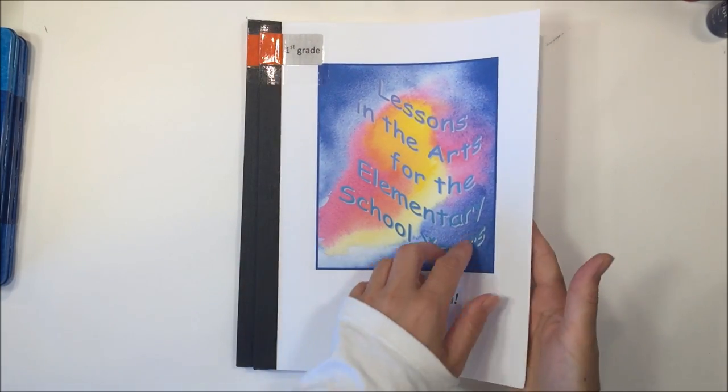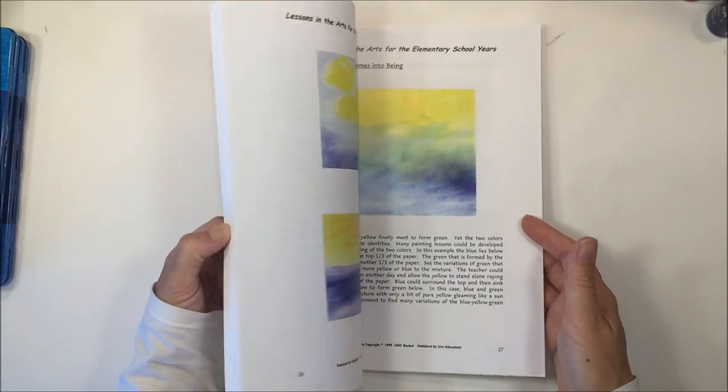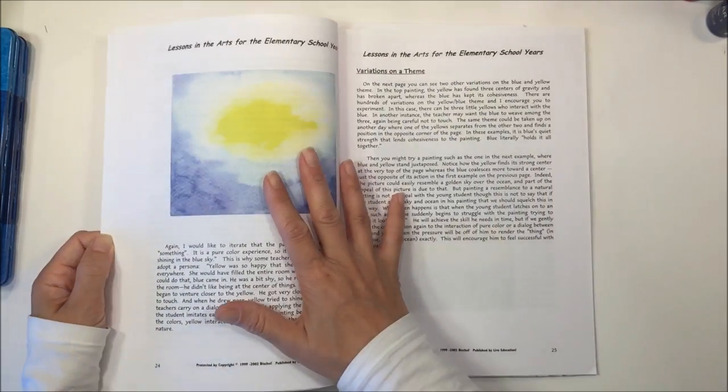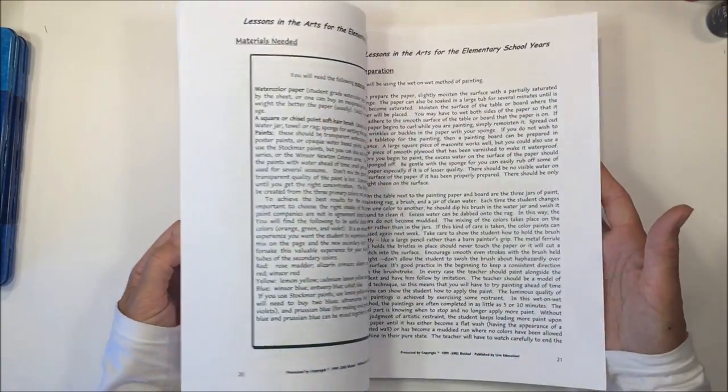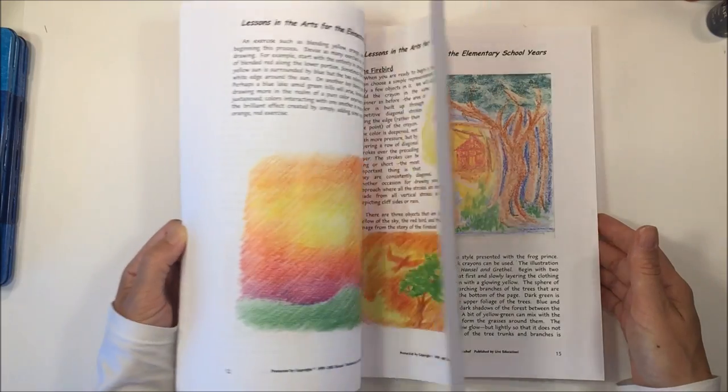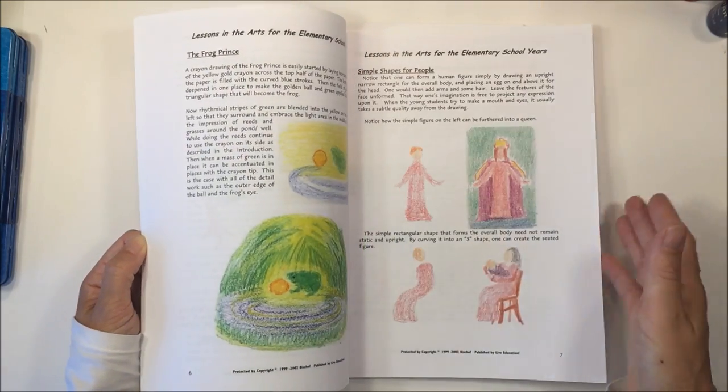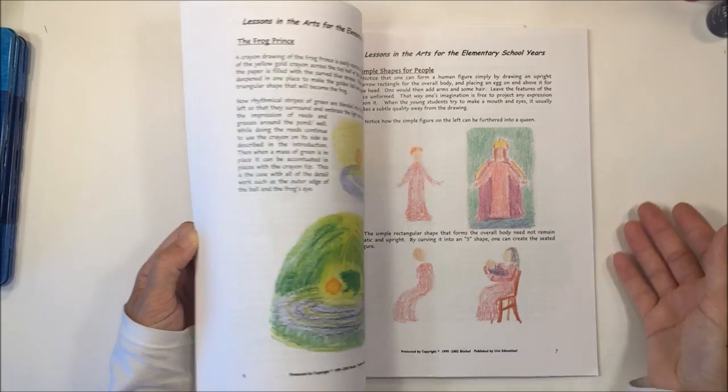The next book is Lessons in the Arts for the Elementary School Years. This is going to go over some different techniques that you use for water coloring and for using crayons. This is not just for first grade. This can go into third, fourth, and maybe even fifth grade before they transition from crayons to colored pencils.